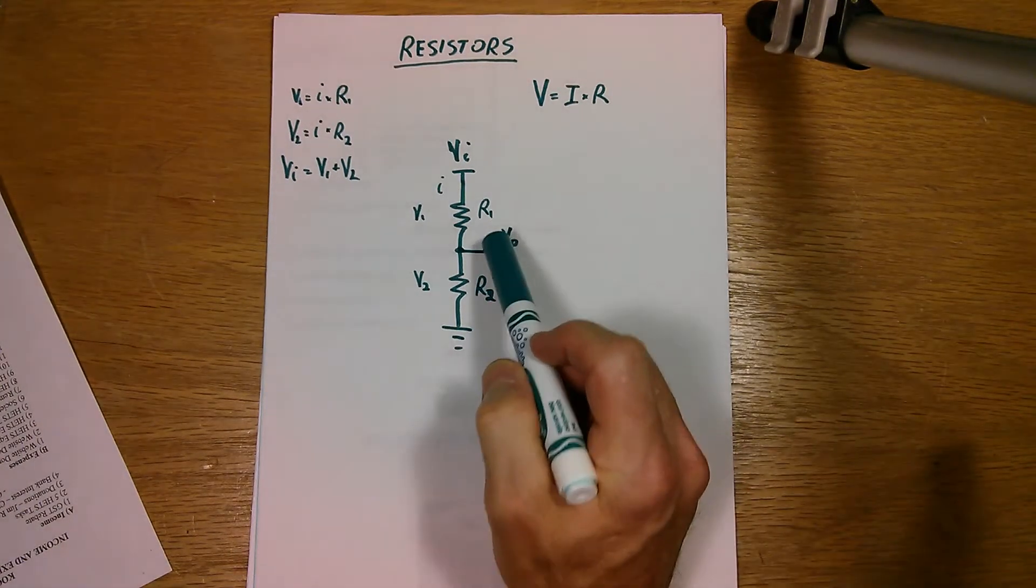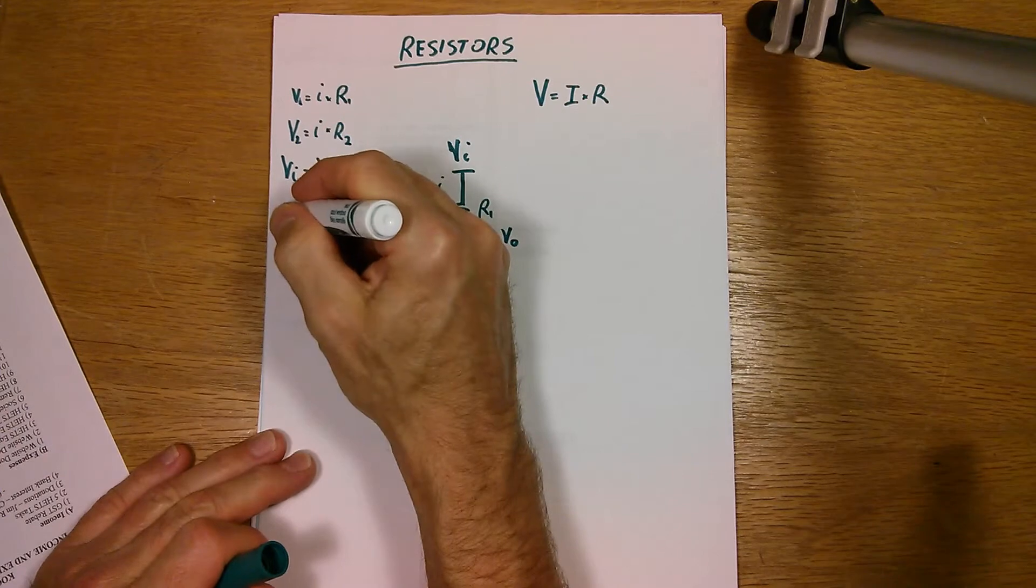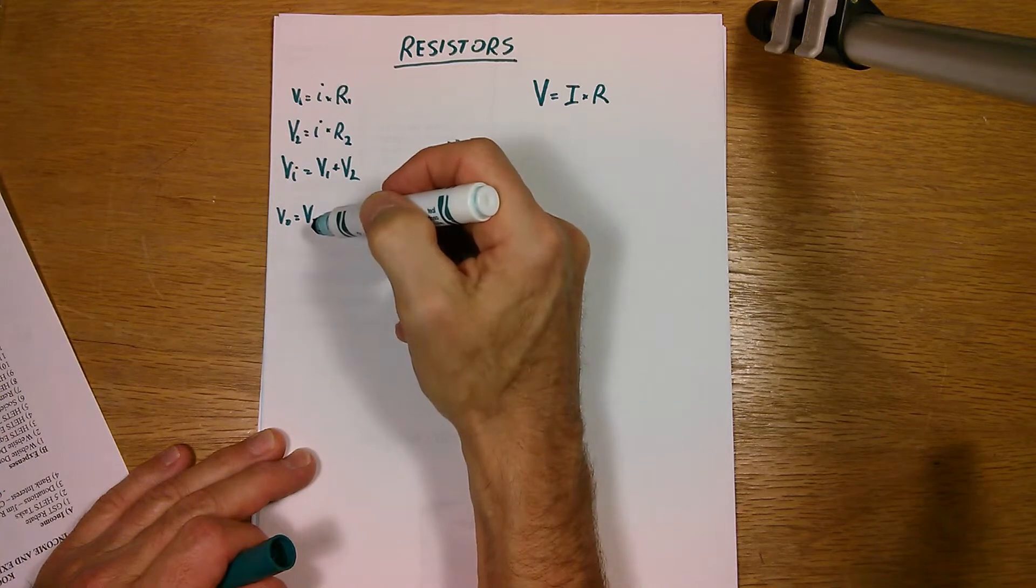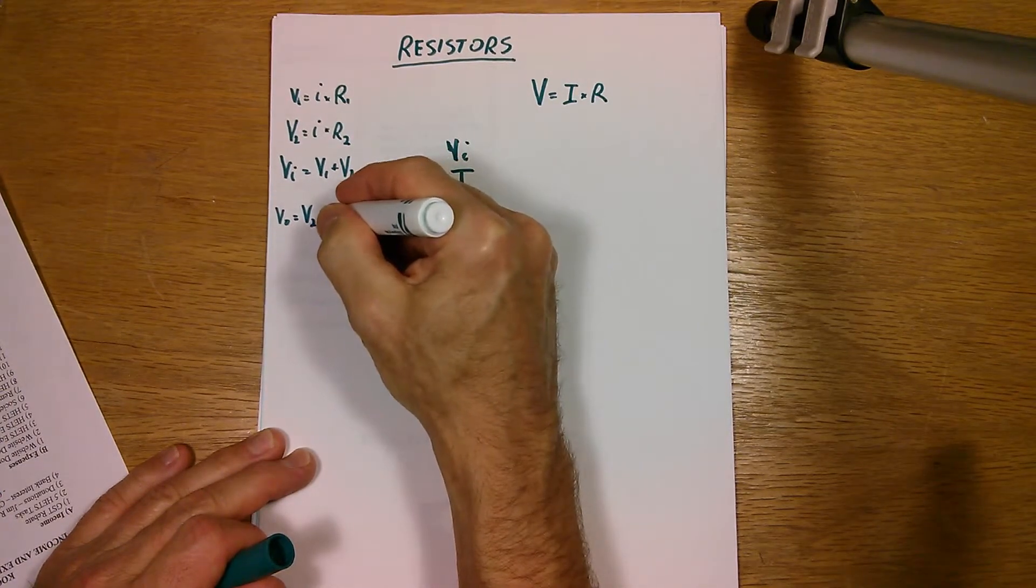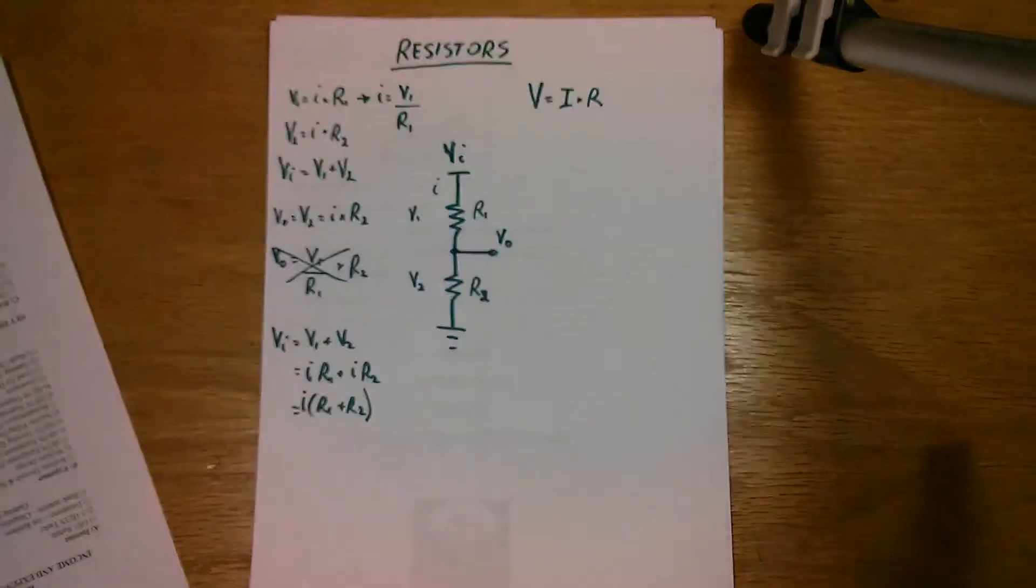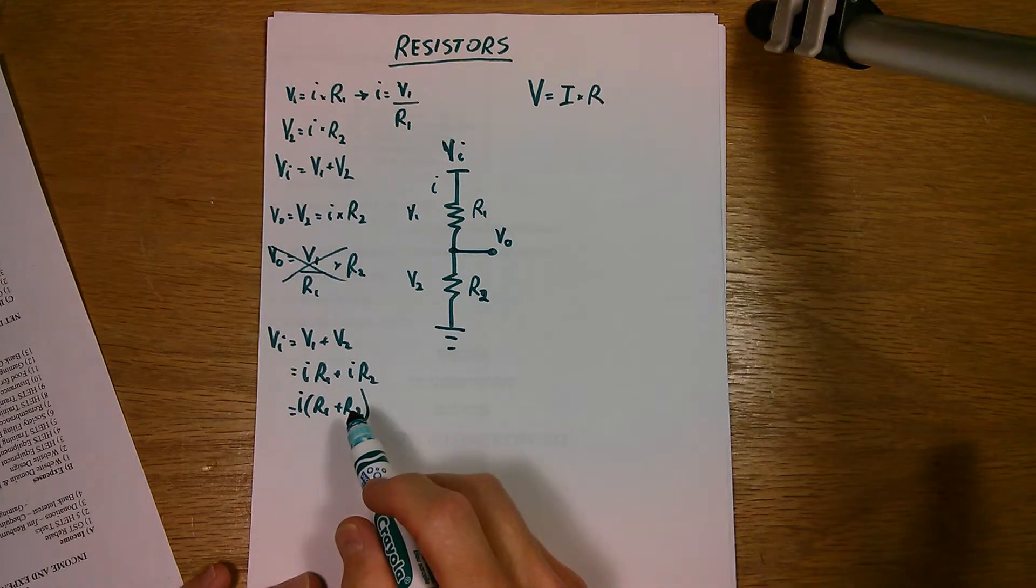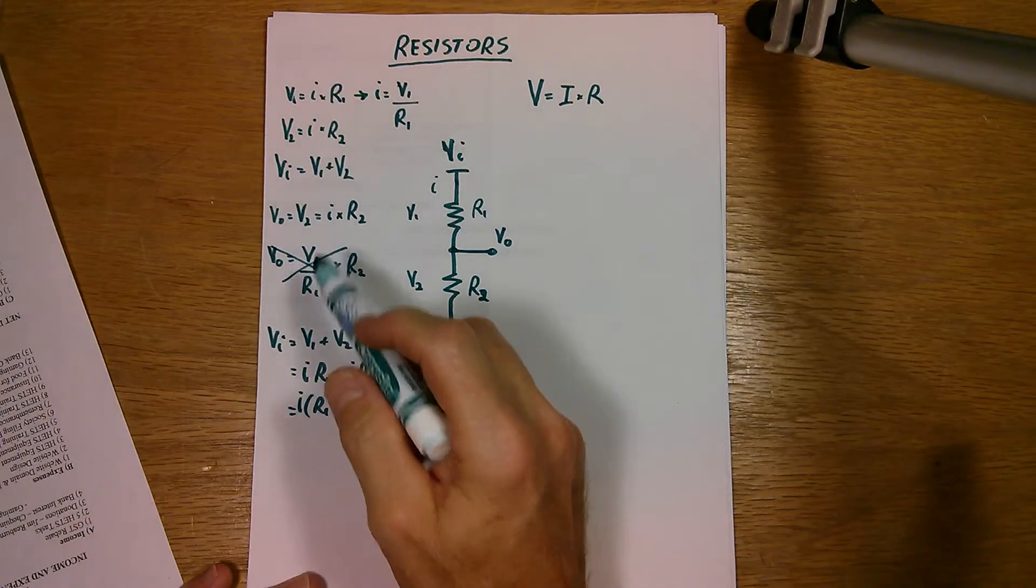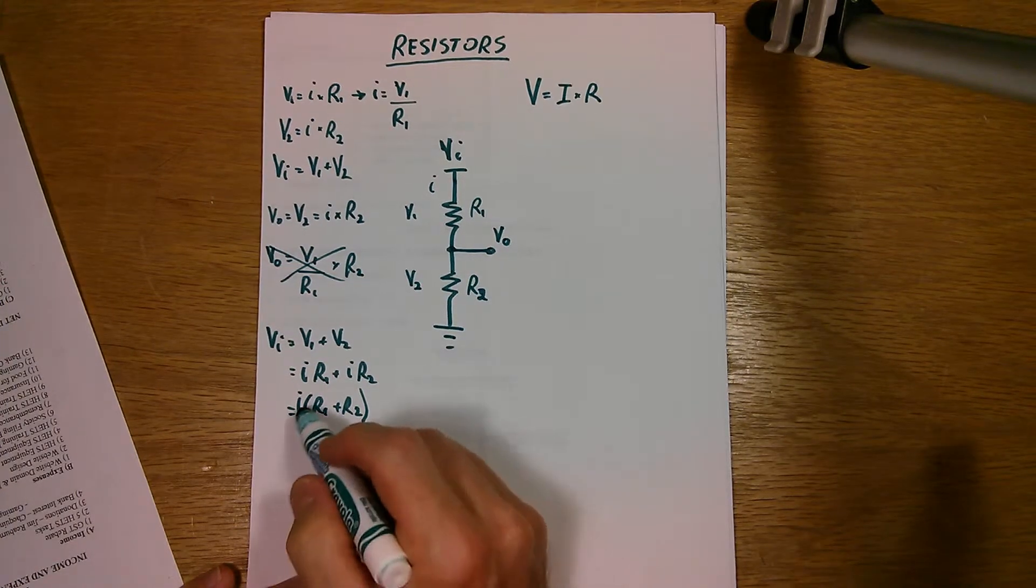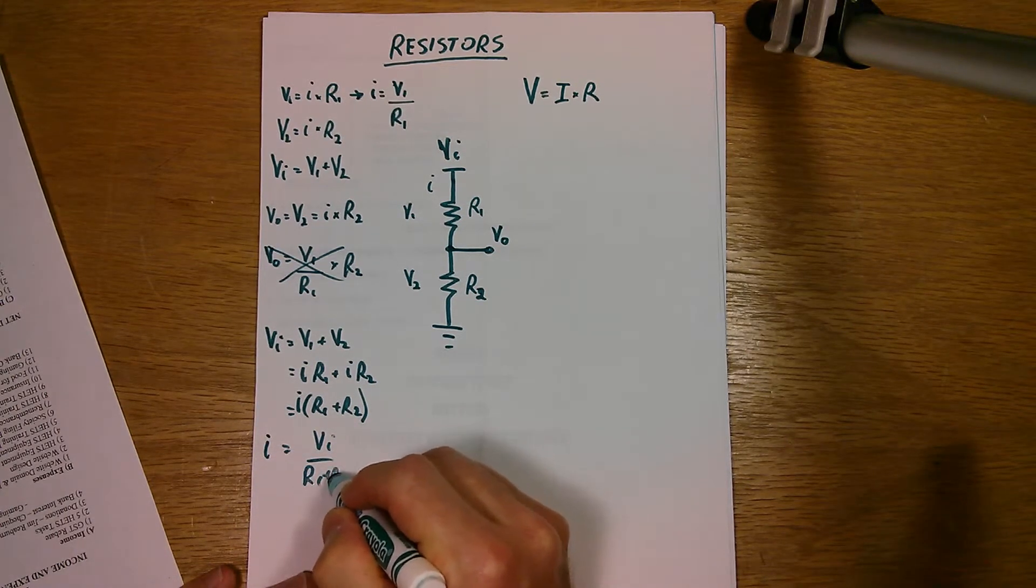So in this case, V_0 is equal to the voltage across V2. So I'll write that out. V_out equals V2. And what does V2 equal? It equals this one here. So I times R2. So I'll rearrange this for I. Let's rearrange this here. V_in is equal to I times R1 plus R2. So I'll get I out and make this equal to V_in over R1 plus R2.